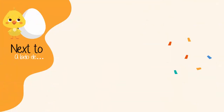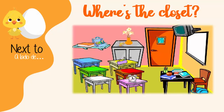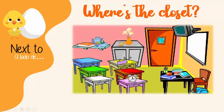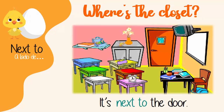The first preposition we are going to see is NEXT TO. NEXT TO means AL LADO DE, o a un lado. For example, according to this picture, where is the closet? We could say it's NEXT TO THE DOOR. Está a un lado o está al lado de la puerta. It's NEXT TO THE DOOR.